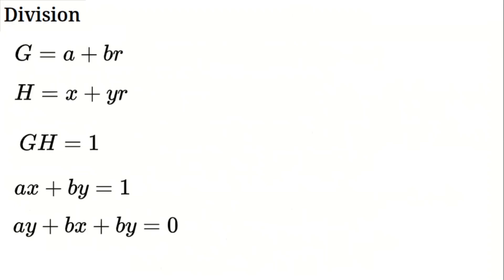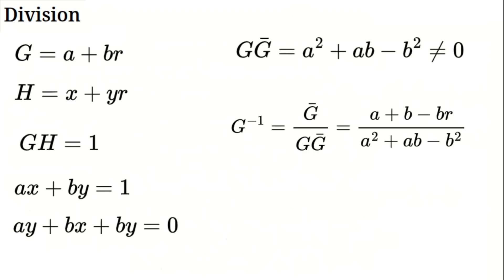To solve, use the conjugate. We found G times G bar is A squared plus AB minus B squared. If this isn't 0, H is G bar over A squared plus AB minus B squared. That's A plus B minus BR over A squared plus AB minus B squared. But if A squared plus AB minus B squared equals 0, there's no inverse. G is a zero divisor, a quirk of this algebra.